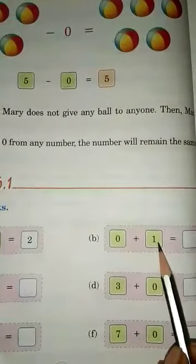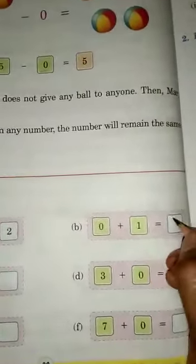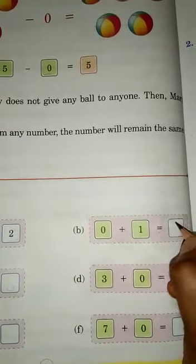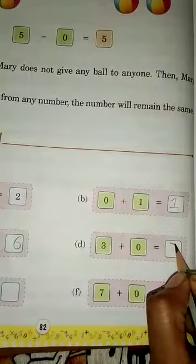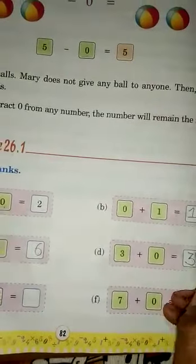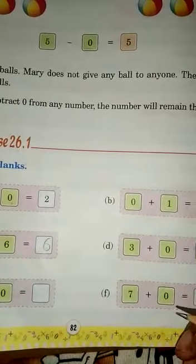0 plus 1, the number will remain the same: 1. 0 plus 6 equals 6. 3 plus 0 equals 3. In this way, you have to do all questions.